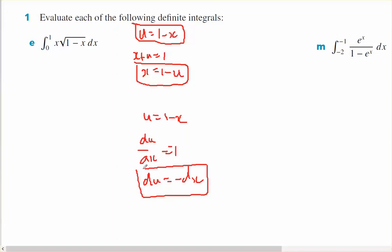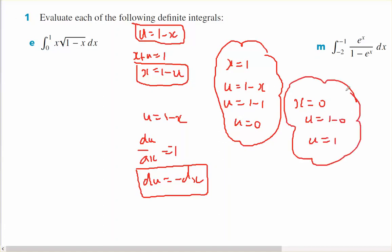I've got all my bits lined up. I also know that when x equals 1 and u equals 1 minus x, then u will equal 1 minus 1 or u will equal 0. And when x equals 0, u will equal 1 minus 0 or u will equal 1. That's ready for my substitutions for my integrals.